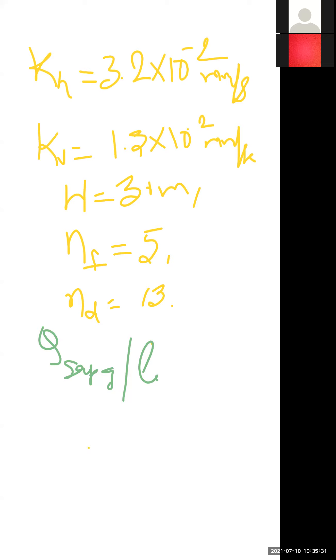Equivalent permeability K_equivalent equals the square root of KH times KV. So this value is square root of 1.5 times 3.2 times 10 to the power minus 4. So K_equivalent equals 2.19 times 10 to the power minus 2 mm per second.